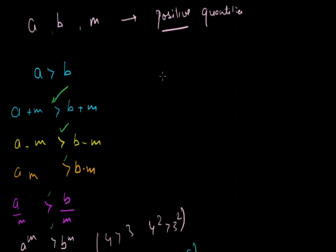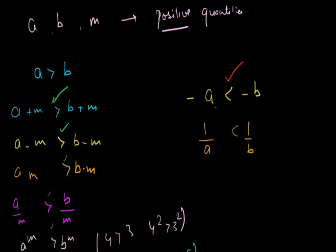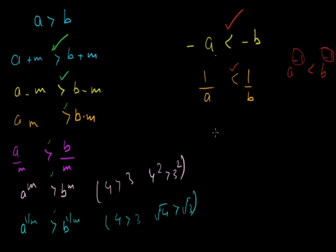Now, when will the sign change? There are a few cases. If a is greater than b, then negative a is less than negative b — the sign is changed. Second case: 1 upon a is less than 1 upon b — again the sign changes. This is because it is equivalent to a raised to power minus 1 is less than b raised to power minus 1. Due to the negative exponent, the sign changes. Similarly, a raised to power minus m is less than b raised to power minus m, where m is positive.